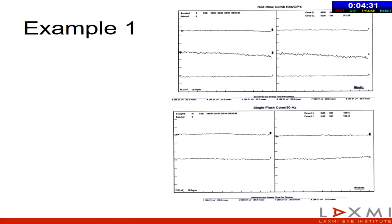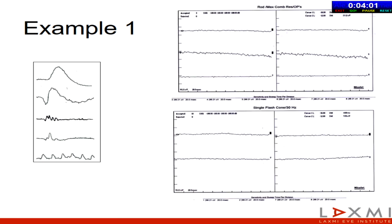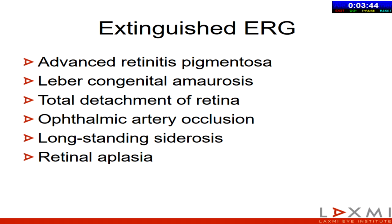Let's take a few examples. Looking at the right and left eye ERG — an audience member identifies it as a flat line or extinguished ERG. This is an example of widespread retinal problems affecting both the outer and inner retina. Conditions giving an extinguished ERG include advanced retinitis pigmentosa, longstanding total retinal detachment, bilateral LCA, ophthalmic artery occlusions, longstanding siderosis, or retinal aplasia. All five waveforms — three scotopic and two photopic — are almost flat.